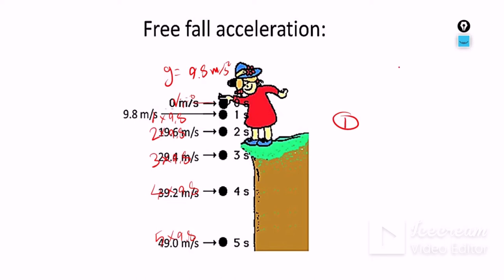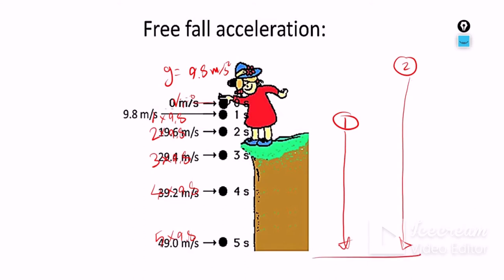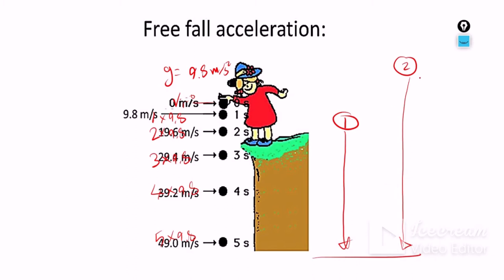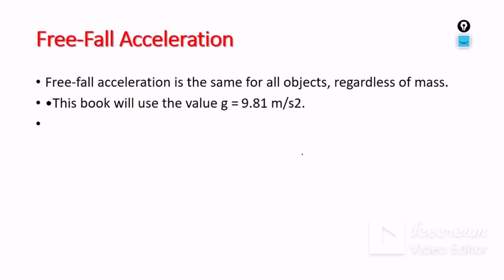If we have two objects and one is lower than the other, both reach the ground at the same time. Why? Because the lower object is moving faster. Object number two will be faster than number one. Suppose object one reaches the ground at 100 m/s after 10 seconds, but object two reaches it at about 50 m/s after 5 seconds. Different speeds, but they reach the ground at the same time — because of free fall acceleration and gravity.